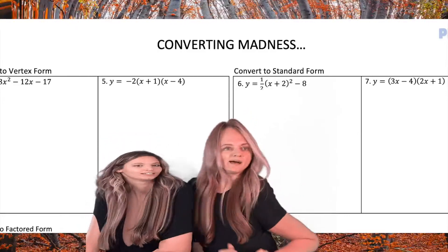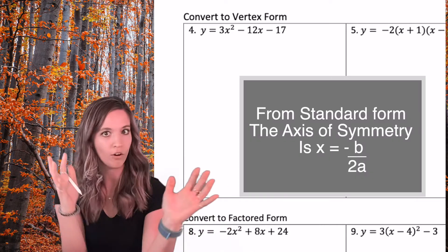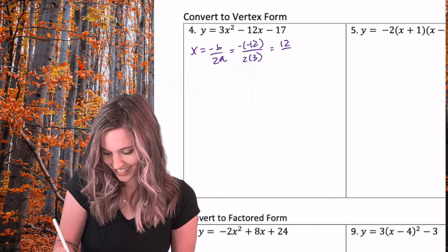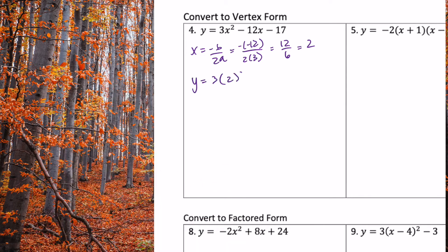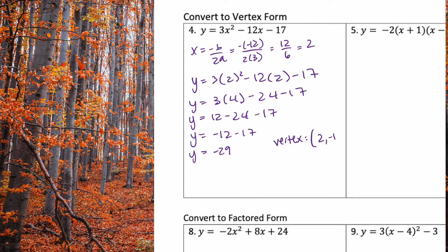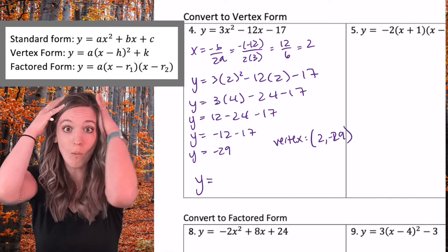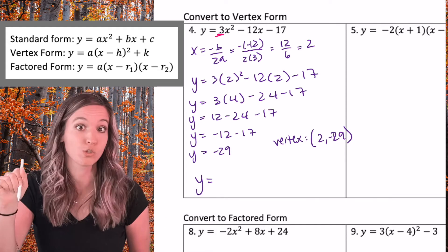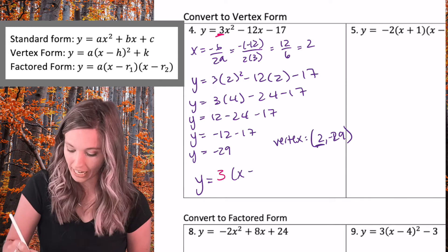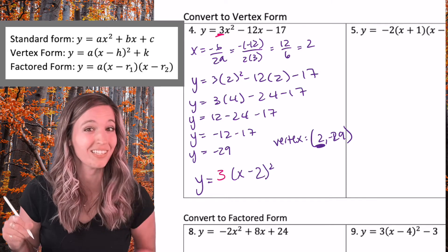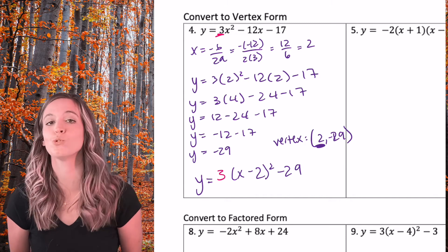Converting madness — converting to vertex form. We have standard form and want to get to vertex form, so we need the vertex. Use x equals negative b over 2a to find the axis of symmetry. Once we have that, it's the x-coordinate of the vertex — plug it in to find the y-coordinate. The vertex comes out to (2, negative 29). Now plug into vertex form: y equals a times (x minus h) squared plus k. The a value comes from standard form — it's 3. So: y equals 3 times (x minus 2) squared minus 29.